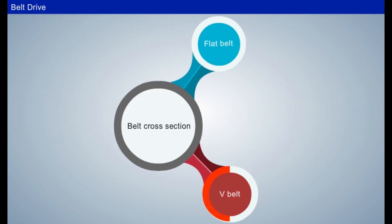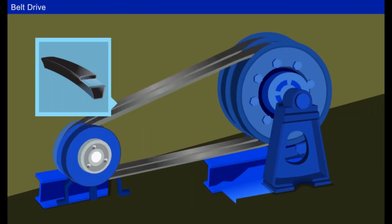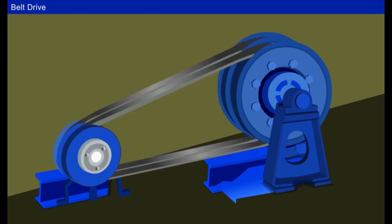In a V-belt drive, grooves are made on the rim of pulley. So, slip is negligible due to the wedging action. In multiple V-belt systems, more than one belt on the pulley can be used to increase the power transmission capacity.